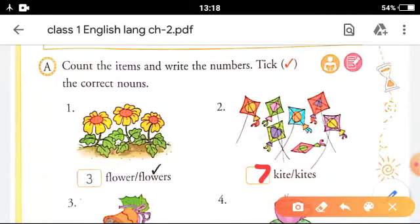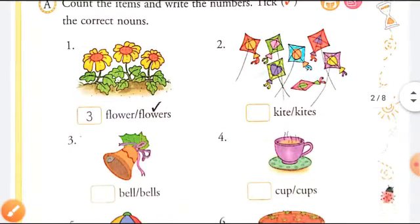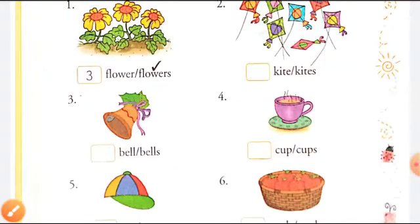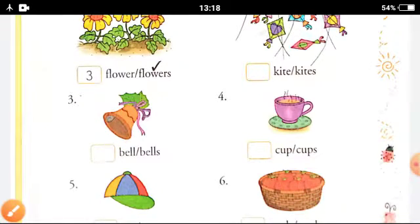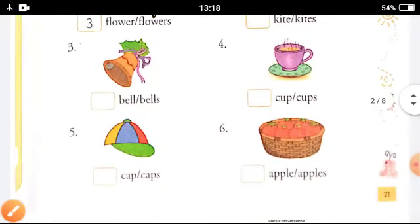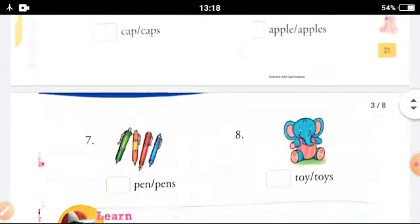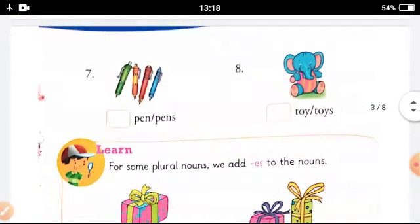This is how you have to do. Now see, bell, how many bells are there? See, pen, how many pens are there? One, two, three, four. So you write four here, four pens.